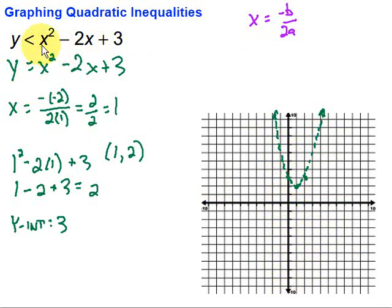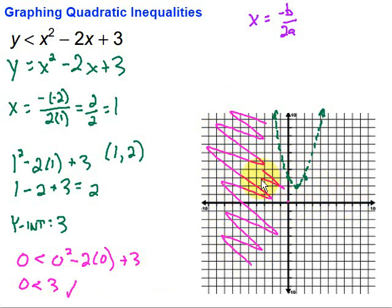So, I'm going to take zero, zero and fill it into my original inequality. So, it's going to be zero is less than zero squared minus two times zero plus three. So, that's just all zero and we have zero is less than three. That is true. So, that means I'm going to shade the area that includes that point which is right there. So, I'm going to shade outside the parabola like so.